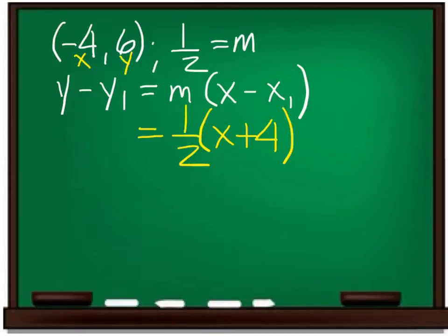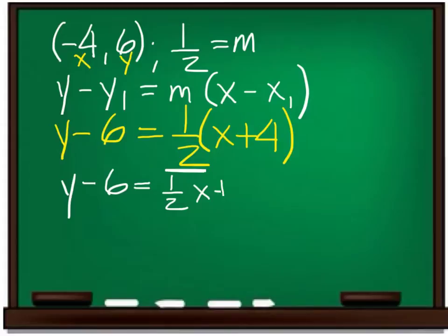The slope is 1 half. The y is 6, so it's going to stay minus 6. Once you do that, you have to multiply the parentheses by the slope. And you'll come up with a half x plus 2.